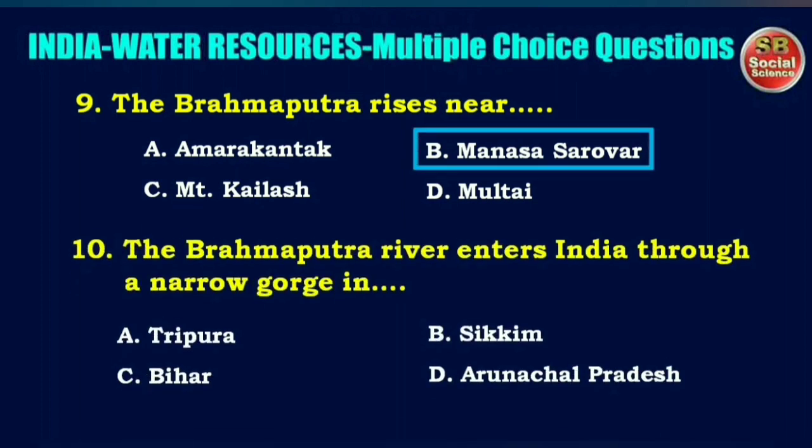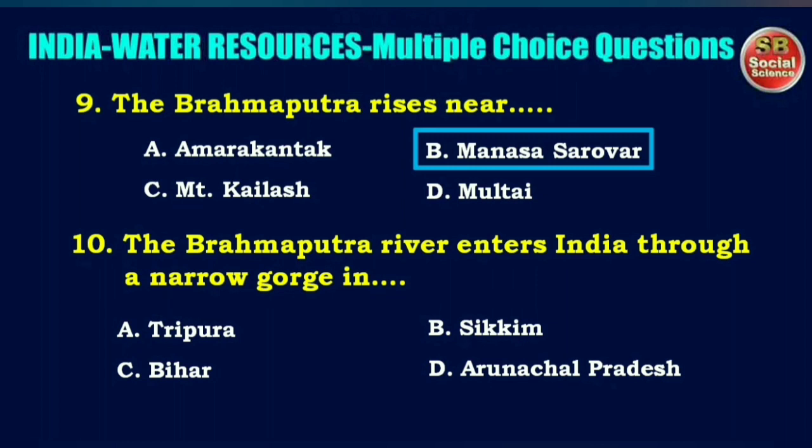The Brahmaputra river enters India through a narrow gorge in — options are Tripura, Sikkim, Bihar, or Arunachal Pradesh. The right answer is option D: Arunachal Pradesh.